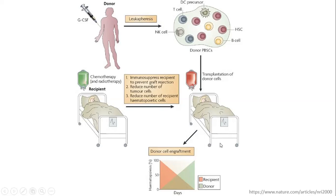Over time following the stem cell transplant, the percentage of donor cell engraftment increases. Given the preconditioning and stem cell transplant, the donor immune system gradually takes over the recipient — the recipient's immune cells are replaced by the healthy donor stem cells, eventually forming a complete chimera. This is the phenomenon of stem cell transplantation.